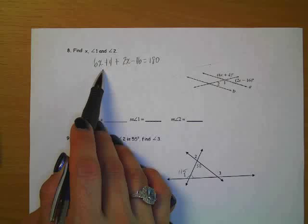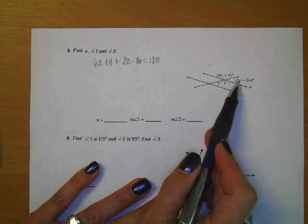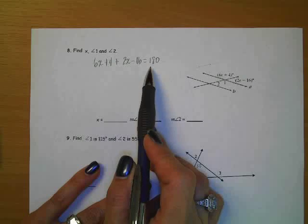So if you add this angle plus this angle, which is this over here, 2x minus 16, it's going to give you 180 degrees.